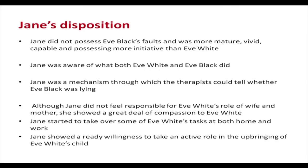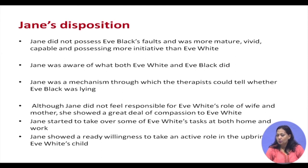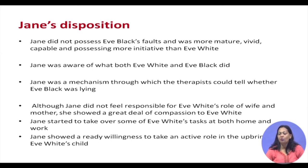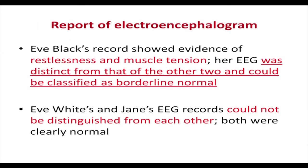Jane's disposition: Jane did not possess Eve Black's faults, and was more mature, vivid, capable, and had more initiative than Eve White. Jane was aware of Eve White and Eve Black and their actions, and Jane was a mechanism through which the therapist could tell when Eve Black was lying. Although Jane did not feel responsible for Eve White's social life, she had a lot of compassion for Eve White and was willing to help out with her work, at home, and in taking care of the child.